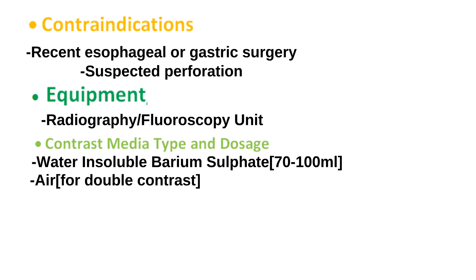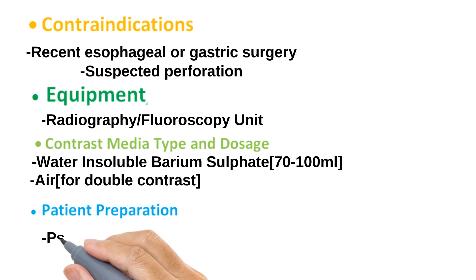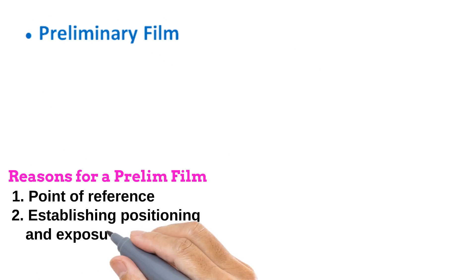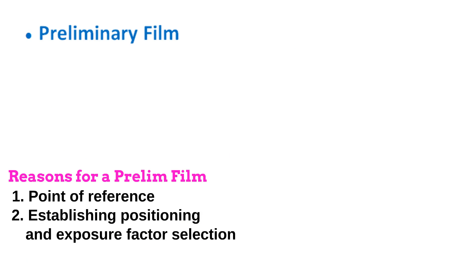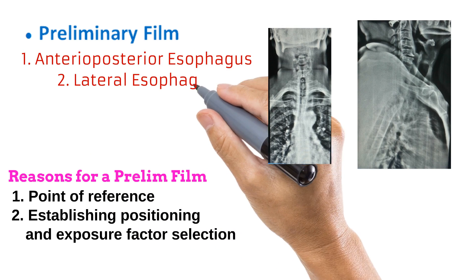Unlike other gastrointestinal tract exams, the barium swallow doesn't have any special bowel preparations. All that may be required is to explain the procedure to the patient and have the patient change into a radiolucent gown after removing all opacities. A preliminary film is useful as a point of reference to which contrast images are compared, and helps establish exposure factors and positioning. The preliminary films taken in barium swallow examinations are the anterior-posterior and lateral views of the esophagus.